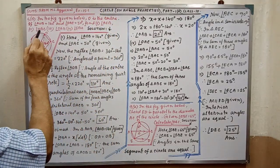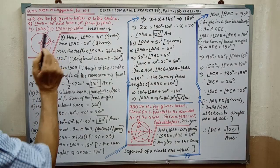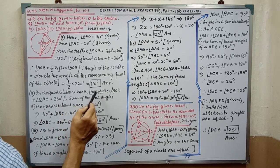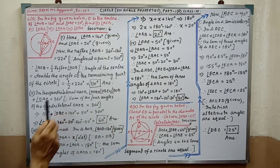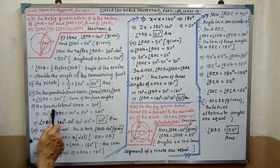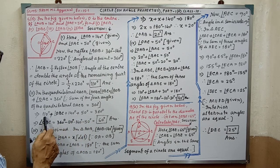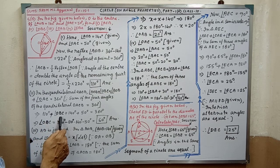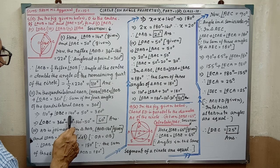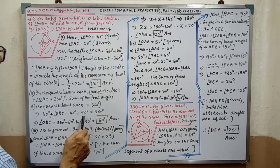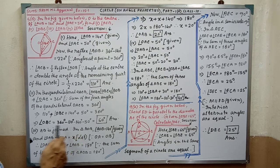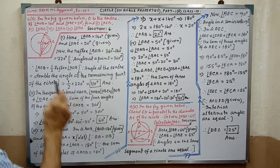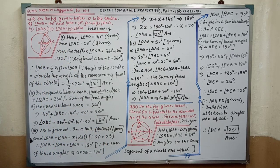Second part: angle OBC is required. In the quadrilateral OACB, the sum of the four angles of the quadrilateral is 360 degree. This reason you have to write clearly. Then we have to put the values — angle ACB equal to 110 degree; OBC is not given; angle AOB equal to 140 degree and OAC equal to 50 degree. After putting the values and simplifying, we are getting angle OBC equal to 60 degree.